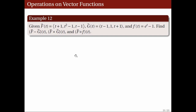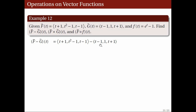For instance, consider the vector functions capital F and capital G as given, and the scalar function small f of t. We're asked to find the difference and the cross product of F and G, and the composition of big F and small f. The difference of F and G is obtained by taking the difference of these two vectors component-wise: t plus 1 minus t minus 1 is 2, t squared minus 1 minus 1 is t squared minus 2, and t minus 1 minus t plus 1 is negative 2. So the difference is the vector function with components 2, t squared minus 2, negative 2.